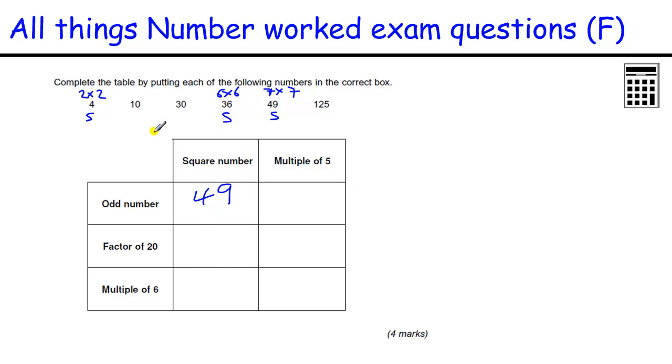Now as soon as we've done the square numbers, we can look through this factor of 20. So what number goes into 20? Well, 36 doesn't, 49 doesn't, but 4 does. And that's the square number. A square number, there's a multiple of 6, and that's the other square number, which is 36. Multiples of 5, anything that ends in those. One of those is an odd number, so 125. One's a factor of 20, so that's 10. And multiple of 6, that's 30.